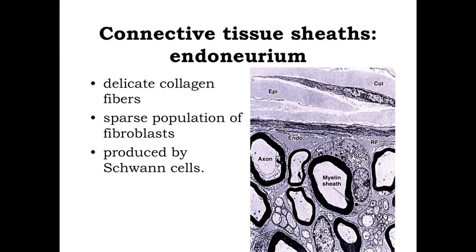Outside of the myelin, we still have connective tissue holding the nerve as an anatomical structure together. Immediately outside these Schwann cells — whether unmyelinated or myelinating — the Schwann cells are held together with an endoneurium, 'endo' meaning inside the nerve. This is a relatively delicate three-dimensional matrix of collagen fibers — relatively thin, delicate fibers — which hold the structure together. A few fibroblasts are present, but the majority of nuclei within this region are going to be the Schwann cells. It's generally thought that the Schwann cells are involved with helping to support and maintain the endoneurium.